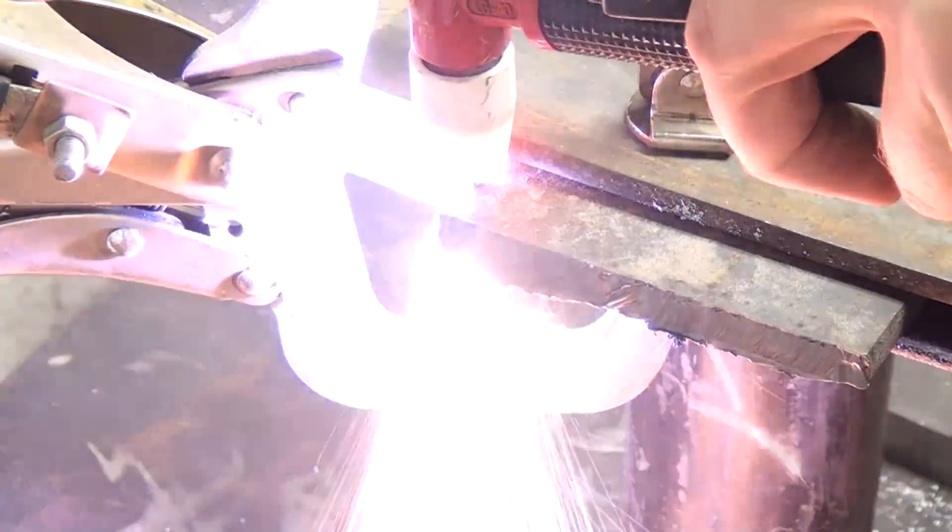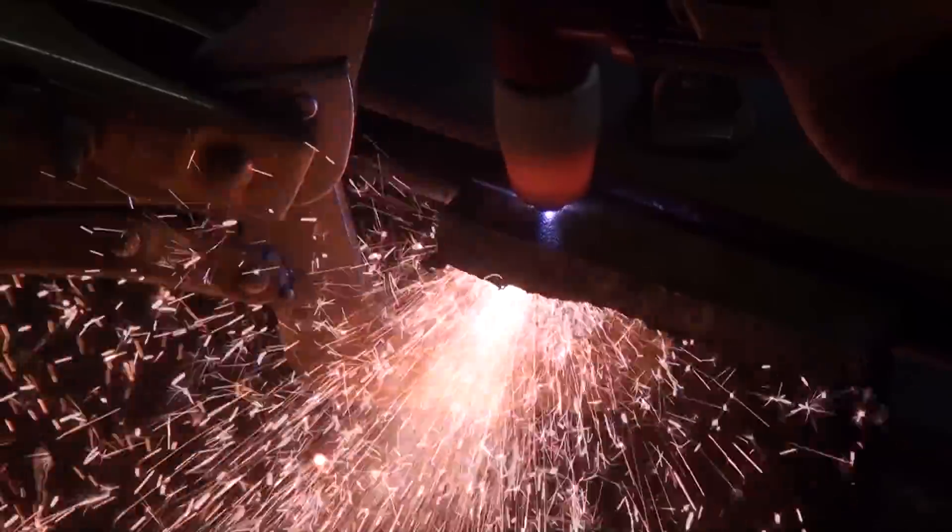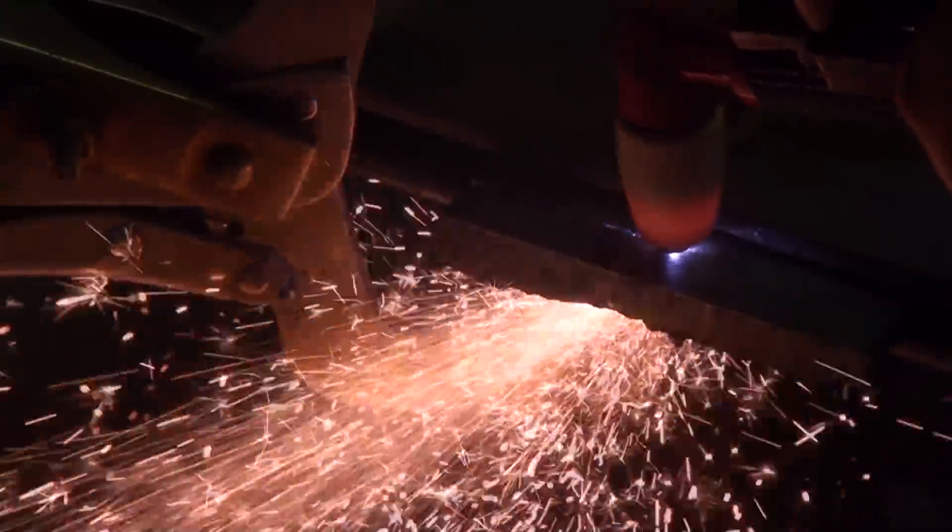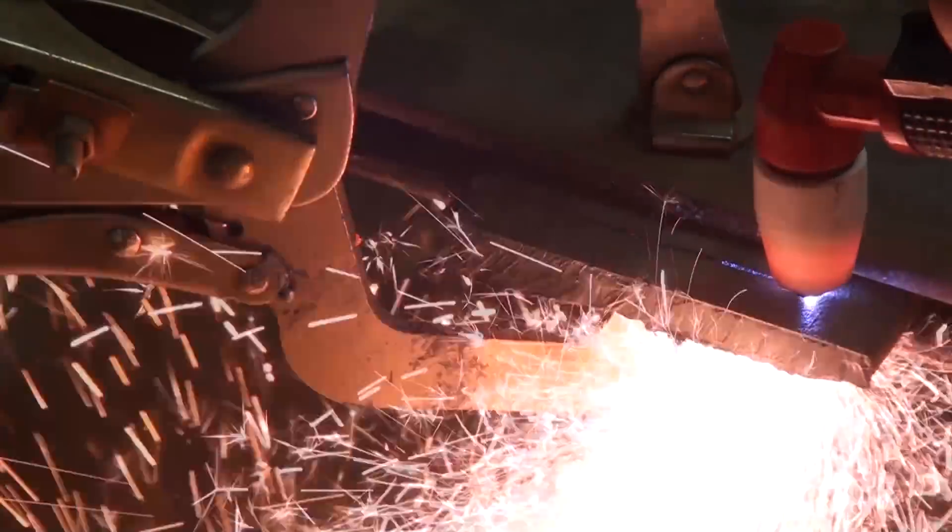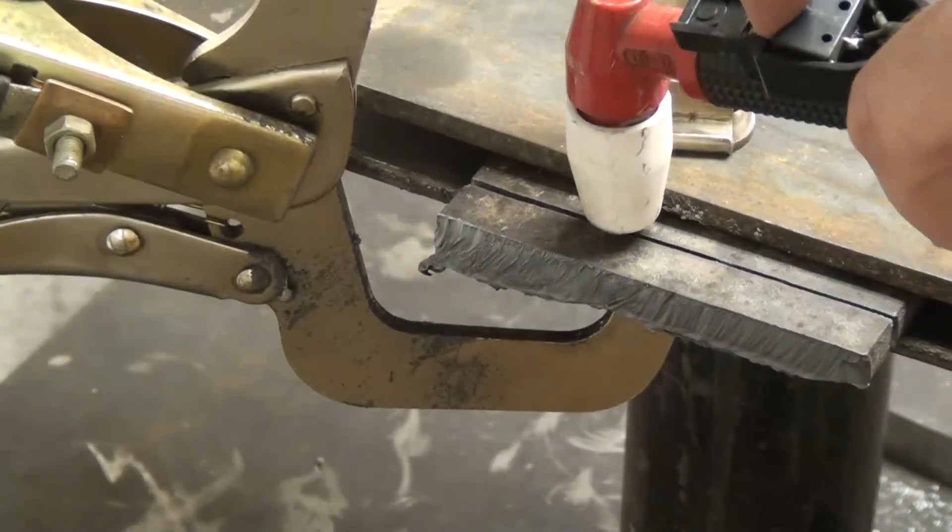So this is the 3/8 steel again, except now we're running at 90 PSI, and I honestly didn't notice while I was making the cut that it was doing any better of a job. It does seem like it's a little bit faster, maybe, but I don't know. I really couldn't tell, and I'm not sure if the higher pressure will shorten the life of the consumables or not.